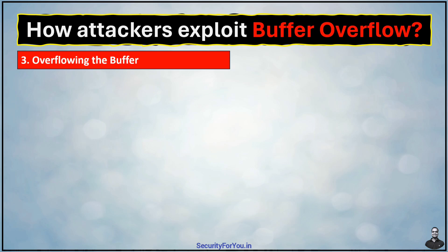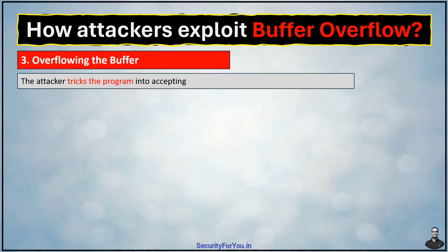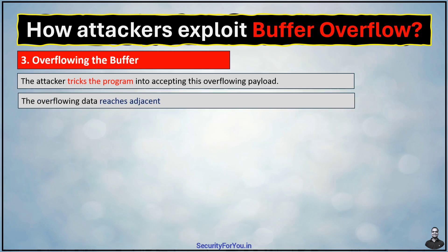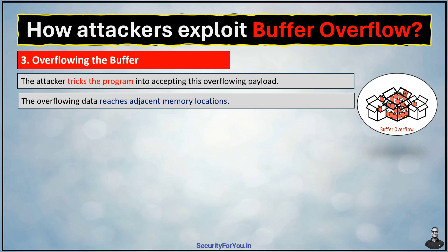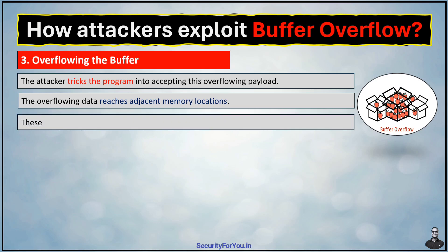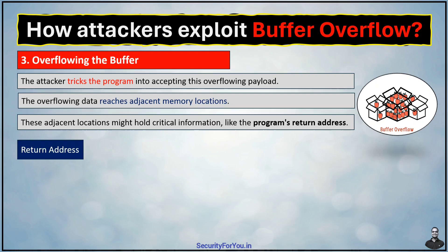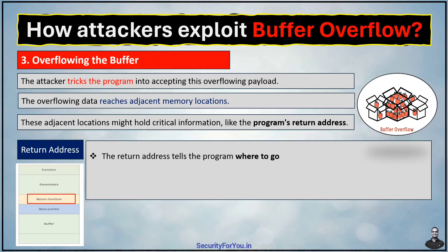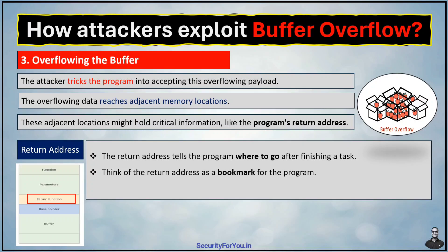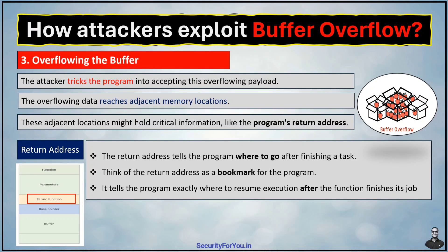The third step is overflowing the buffer. The attacker tricks the program into accepting this overflowing payload. Things get critical when the overflowing data reaches adjacent memory locations — like extra apples spilling over into neighboring boxes. Crucially, these adjacent locations might hold critical information like the program's return address, which tells the program where to go after finishing a task. Think of the return address as a bookmark for the program — it tells the program exactly where to resume execution after the function finishes its job.